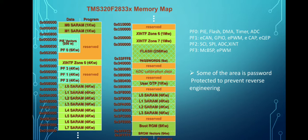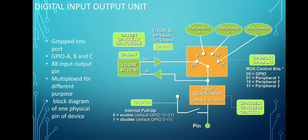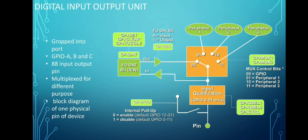The F2833x device has 88 GPIO pins, all grouped into three ports: Port A, Port B, and Port C. The question is whether all 88 GPIO pins act only as input/output pins or can be used for different purposes. The answer is they can be used for different purposes — either as general purpose input/output pins or connected to Peripheral 1, 2, or 3. By using the MUX control bit registers, a single pin can be connected to different peripheral frames for different purposes.